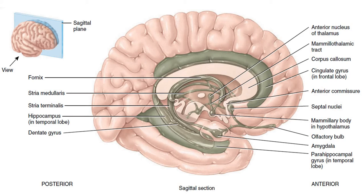This is a sagittal plane view — we've essentially cut through the brain between the two hemispheres, removed the right hemisphere. The only structure we're going to refer to here is the hippocampus, which is sometimes described as seahorse-shaped. It's this long structure that wraps around the corpus callosum and back again. You have two hippocampi, one either side.